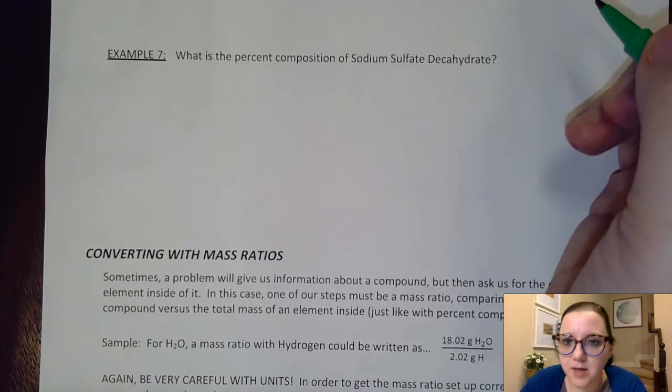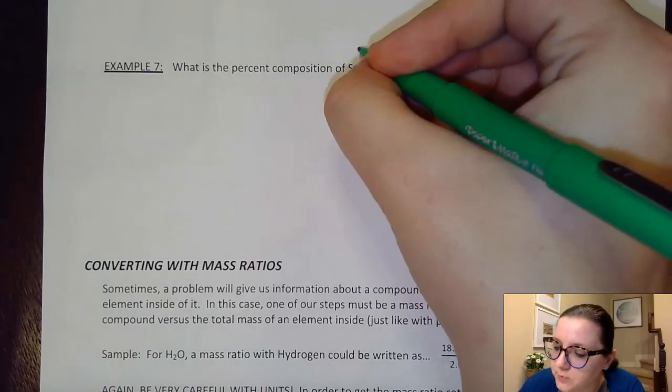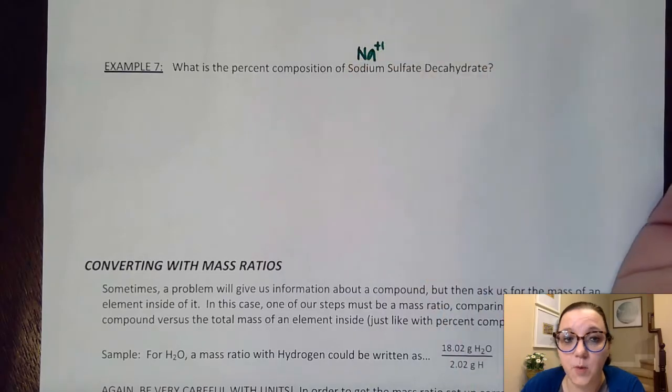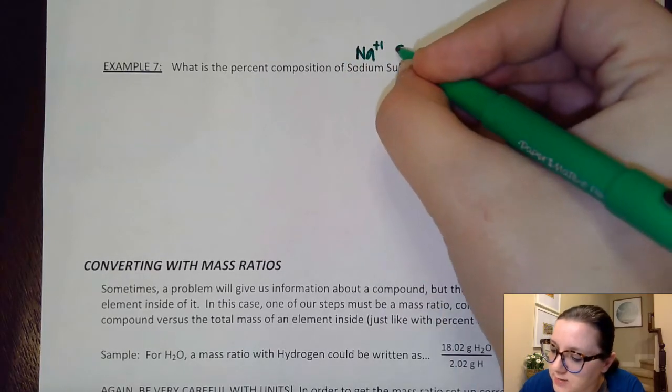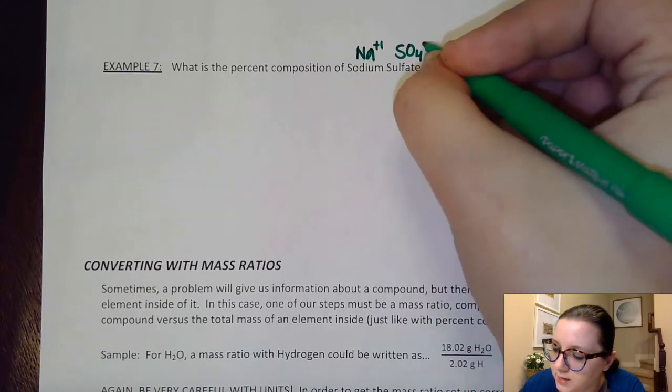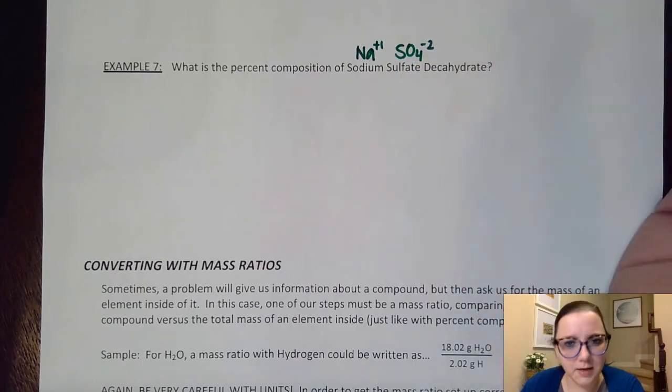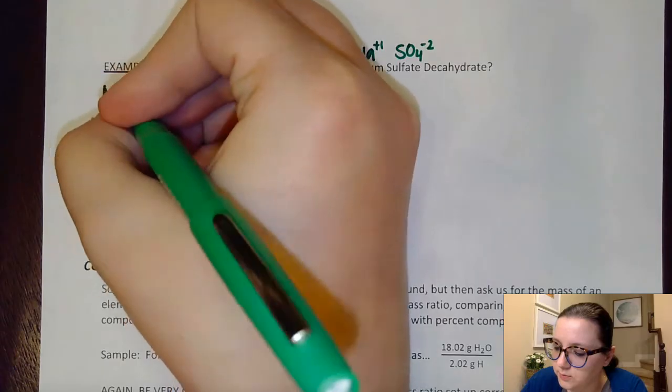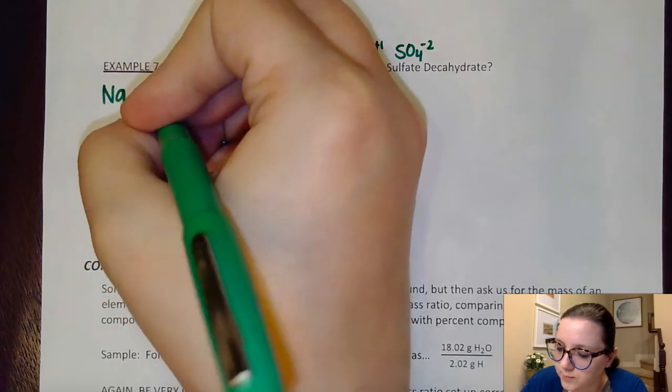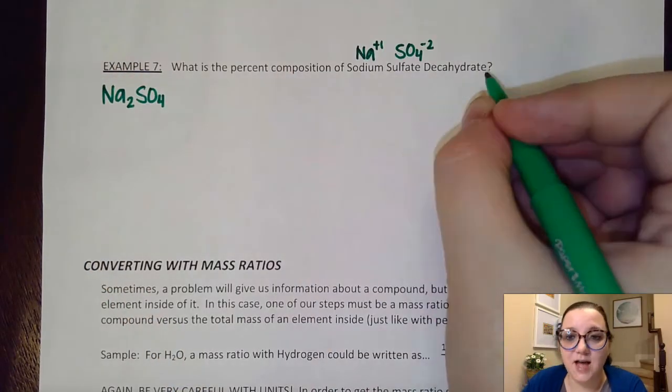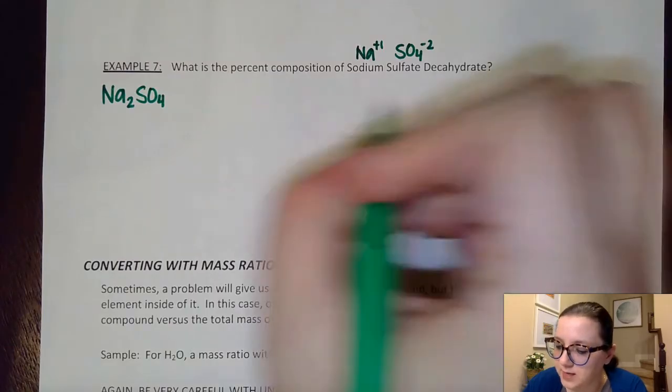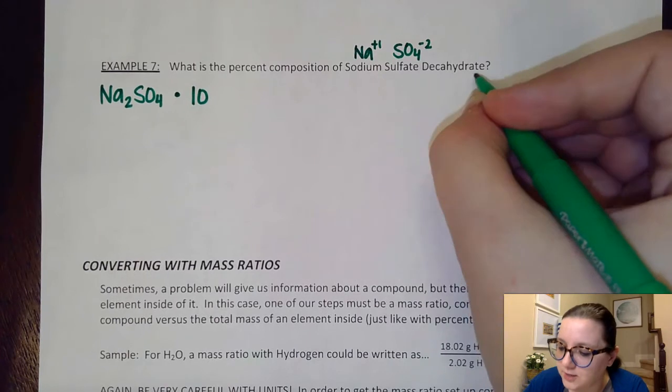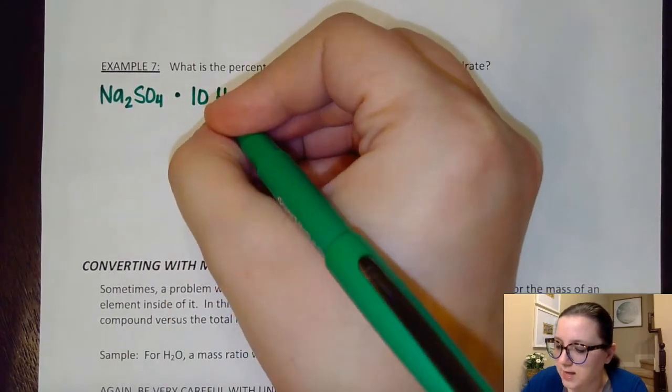So thinking about my compound here, I have sodium, which is Na. I know that has a positive one charge because it's in group one. A sulfate is SO4 with a negative two charge. I see those do not cancel out. And so I'm going to have Na2SO4. And then I'm going to address that hydrate part. So as a reminder, deca means that I'm going to have 10 of our hydrate, our water, attached to this.